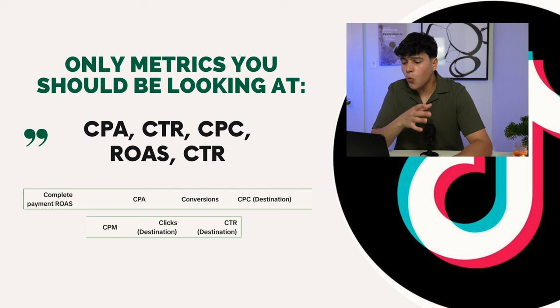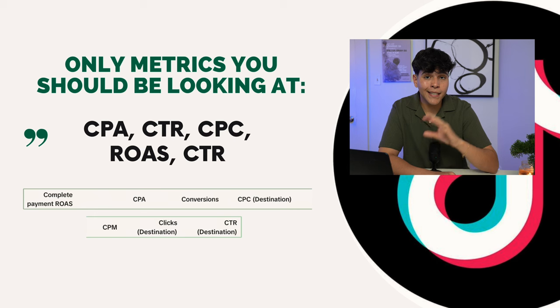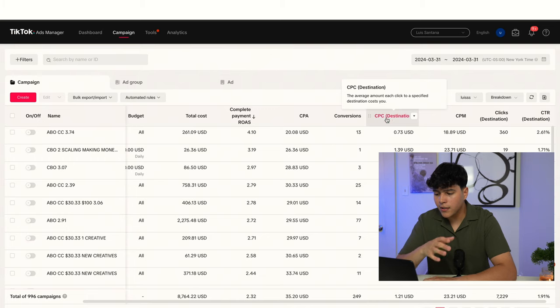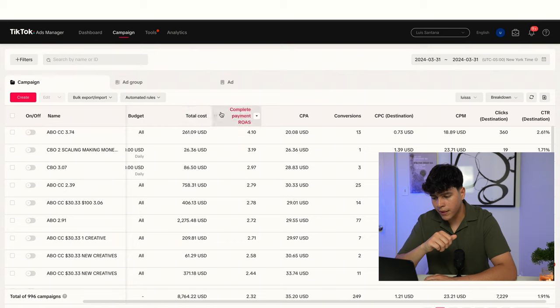Let's talk about what metrics you should be looking at when you're scaling or even testing. I see a lot of people making a huge mistake, which is paper handing — basically just turning campaigns off that are actually good. The only metrics you should be looking at are your CPA, CTR, CPC, and ROAS. These metrics tell you exactly what's going on with your campaign.